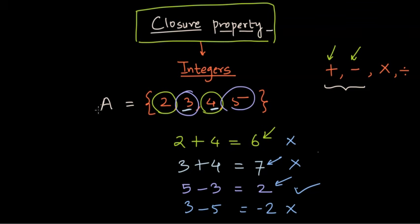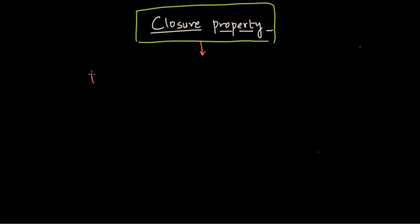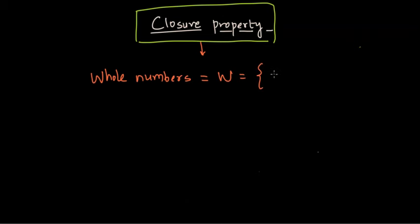That set was small. The sets we usually deal with are larger, such as the set of whole numbers. Whole numbers are natural numbers and zero, represented by W: zero, one, two, three, four, and so on.